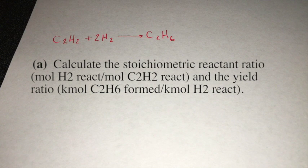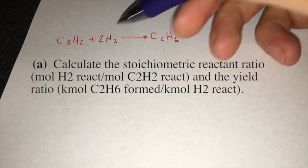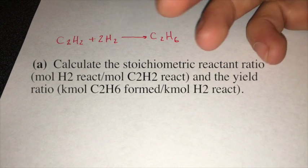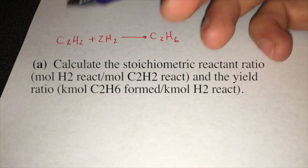The balanced equation for the hydrogenation of acetylene to ethane is given below. For every two moles of hydrogen reacted, one mole of acetylene gets reacted.